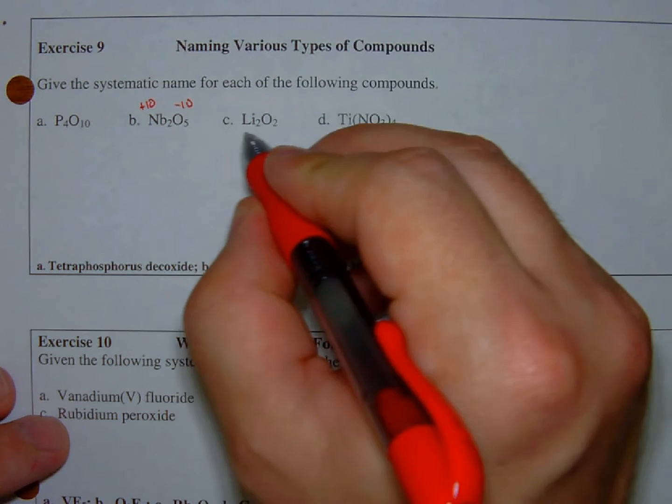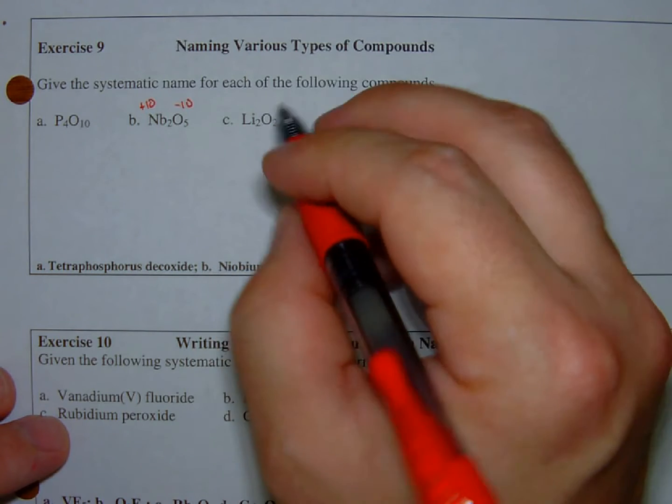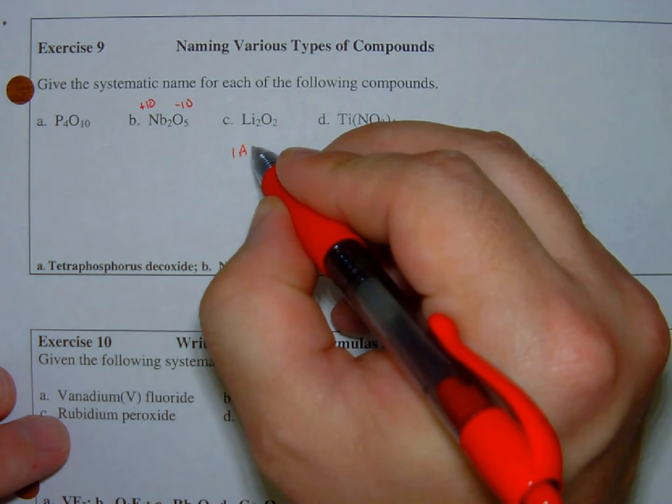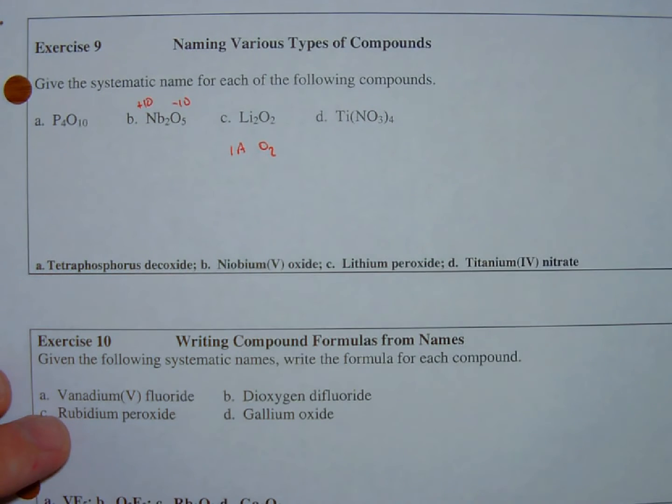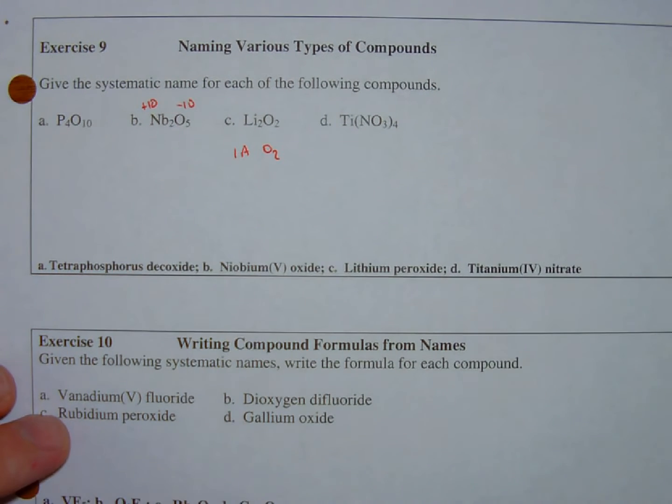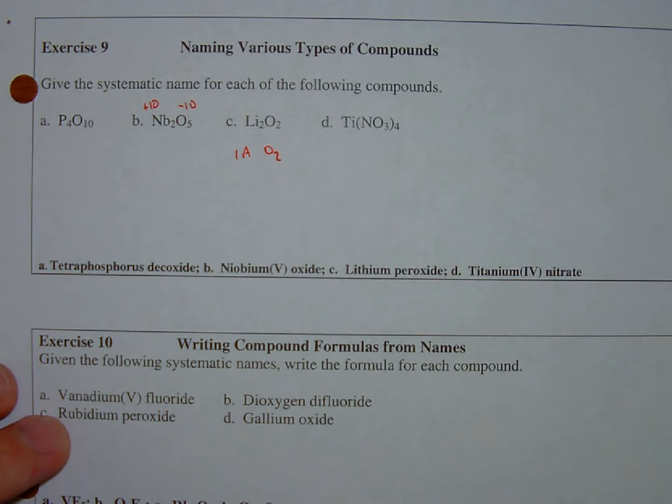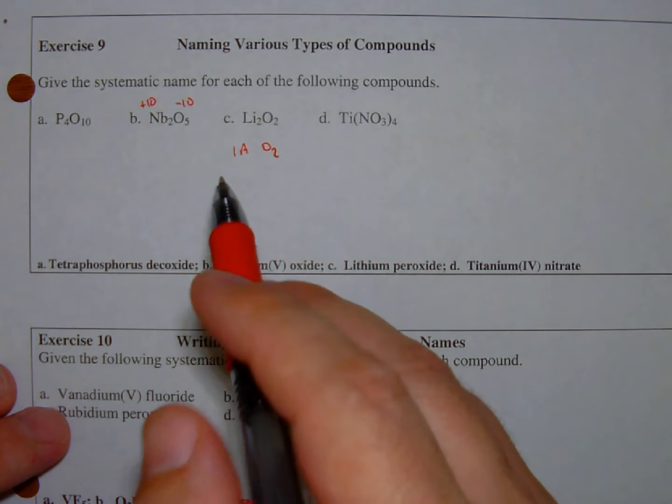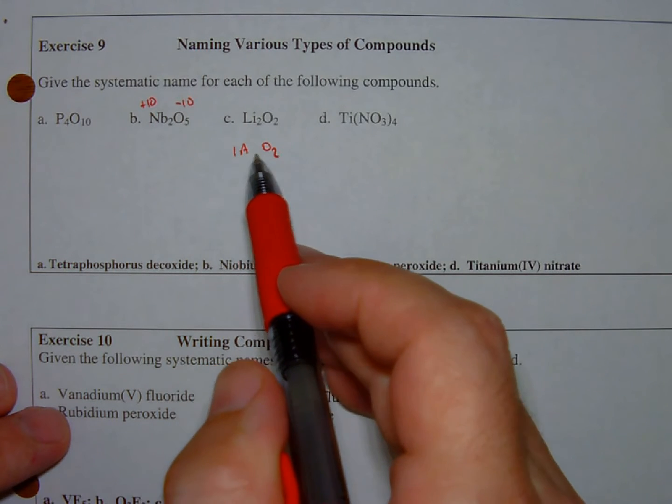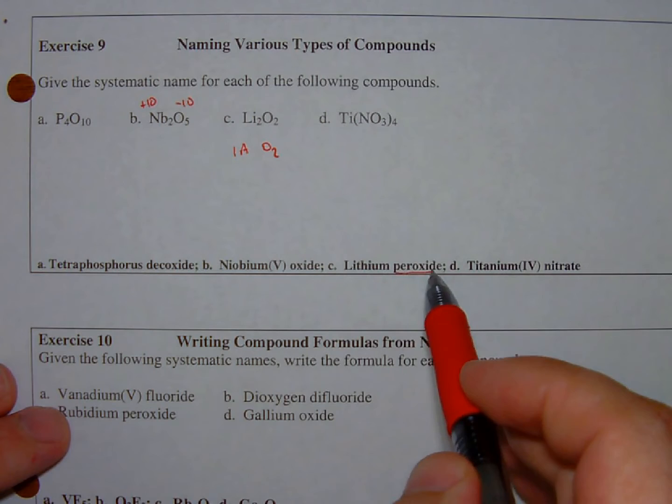Now this is a general form of a peroxide. Any one A element followed by O2 is a peroxide. You can go down the periodic table: hydrogen peroxide, lithium peroxide, potassium peroxide, all the way down. Anything in group 1A with O2 is a peroxide.